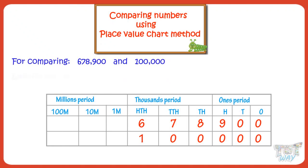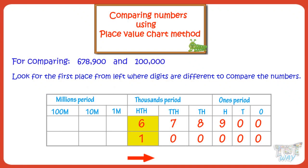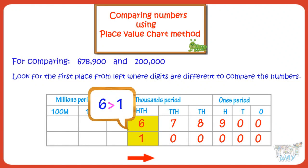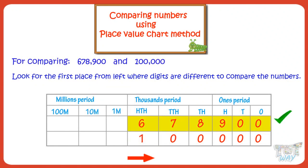Now, in the place value chart, you start at the left and look for the first place where the digits are different to compare the numbers. If we start at left, there are 6 and 1 at the hundred thousands place in both numbers. 6 is bigger than 1. So 678,900 is bigger than 100,000.